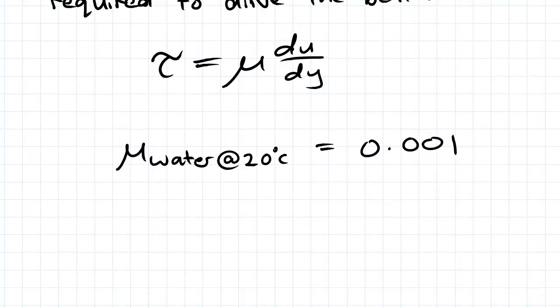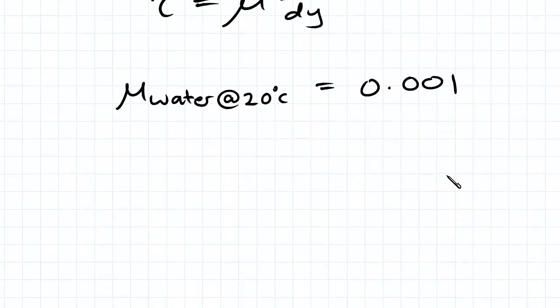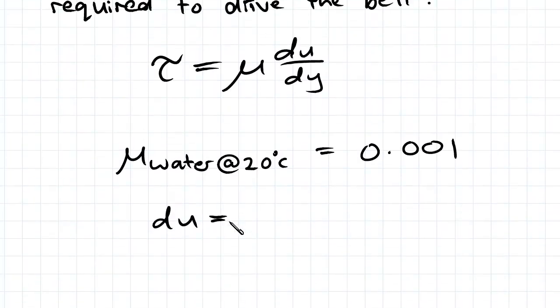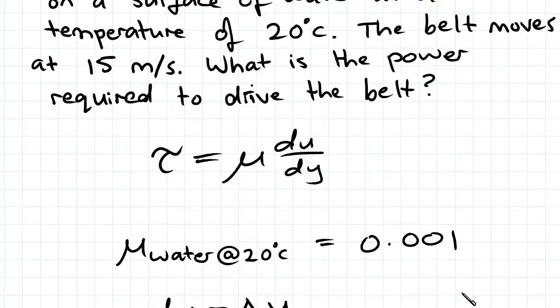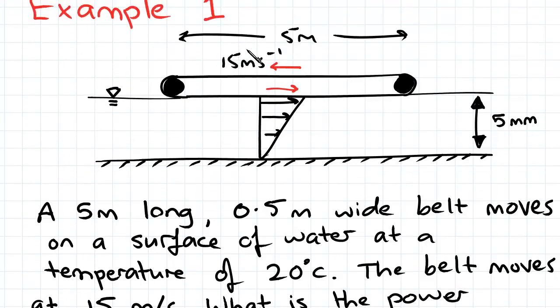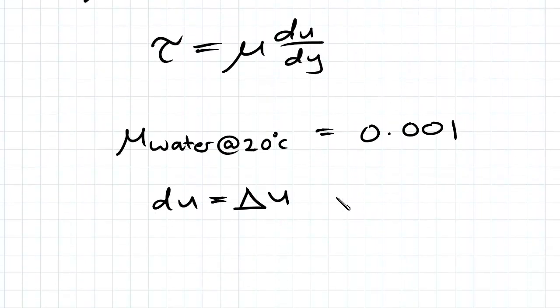So we're going to find each of the terms. We know mu. We need du/dy. So du is the change in speed u in the fluid. So it goes from 0 at the bottom here and at the top, because we're assuming no slip and the belt is being driven at 15 meters per second, at the top it's 15 meters per second. So it's 15 minus 0 which is 15.